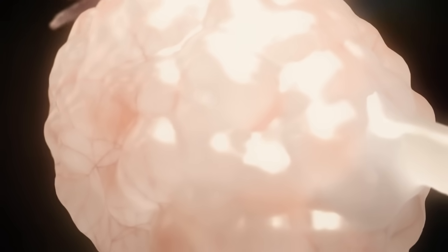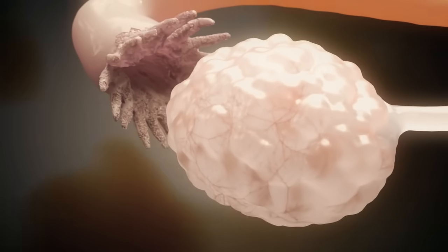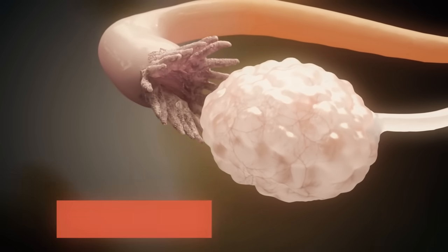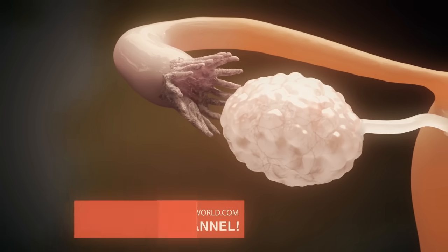The ovary possesses about half a million eggs embedded in follicles. Several follicles, and therefore eggs, mature in each cycle. The dominant follicle grows to about 2 cm and the fimbriated end of the fallopian tube, which eventually catches the egg, moves to the site of ovulation.